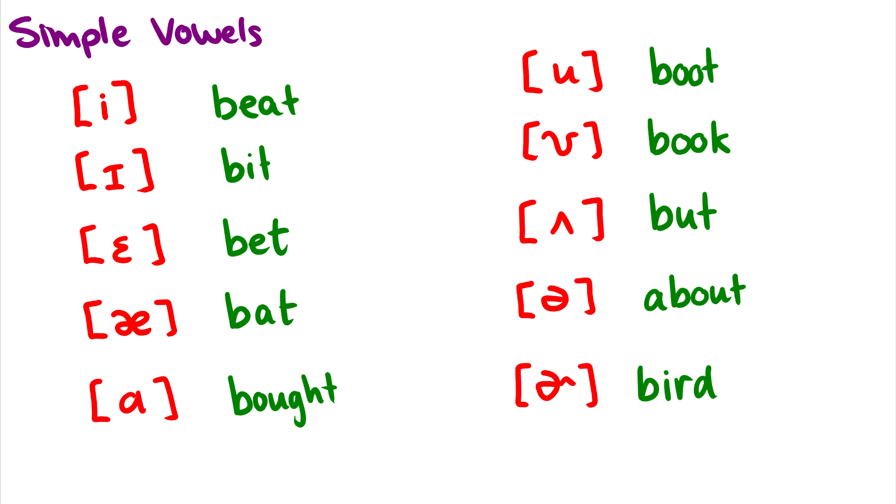The first type of vowels we'll talk about are simple vowels, and these are vowels that you can essentially hold without moving your tongue, lips, or anything for a period of time.